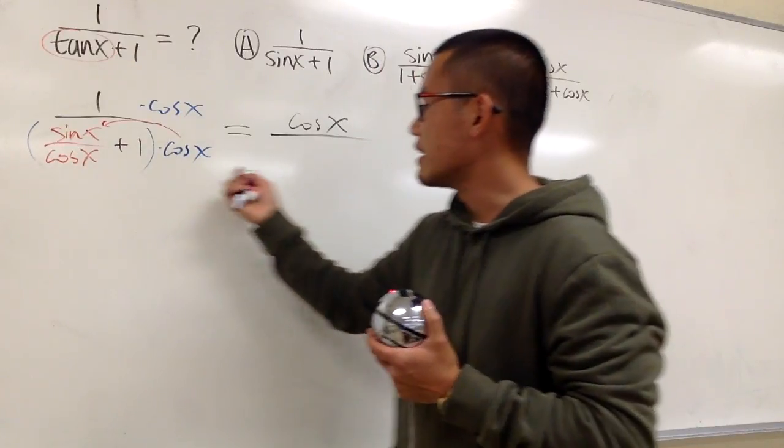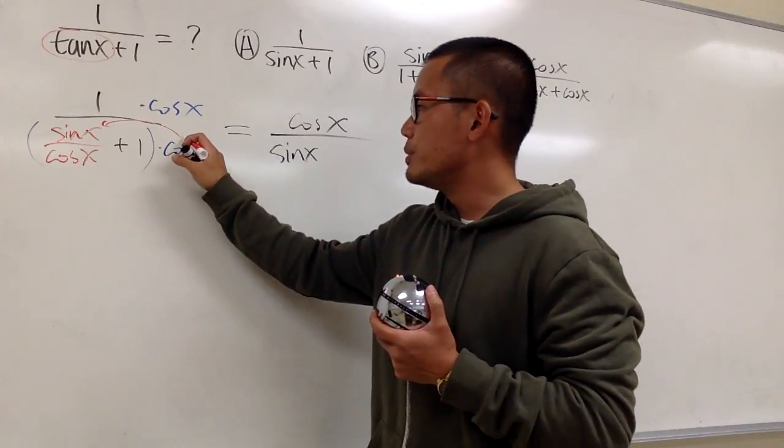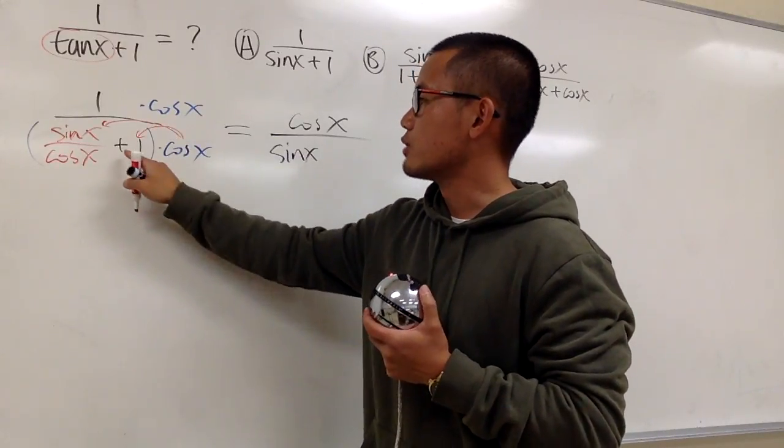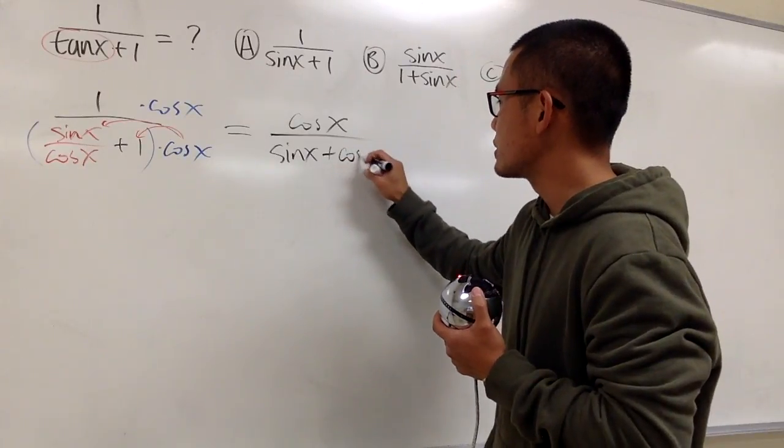That means you will have the sine x left. And then you distribute the cosine x with the 1. So this is plus 1 times cosine x, which is just cosine x.